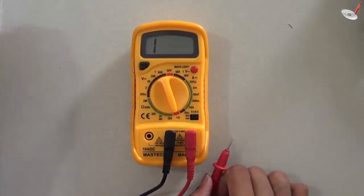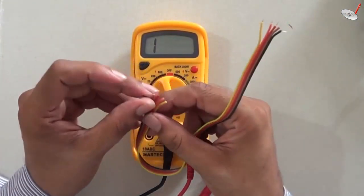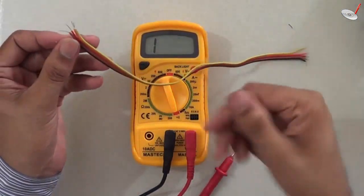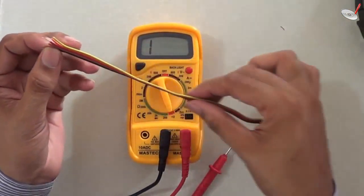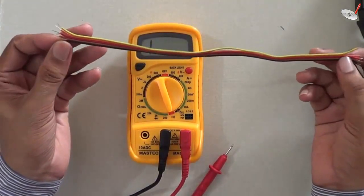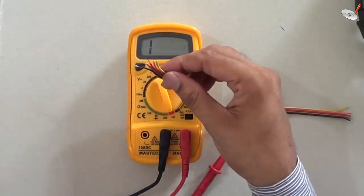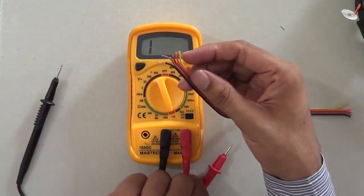I am taking a bunch of wires. Suppose the color is faded and you are not able to find out the correct wire - this wire is starting from here and going there. In that case, this continuity test may be helpful. Now check how it may be helpful.